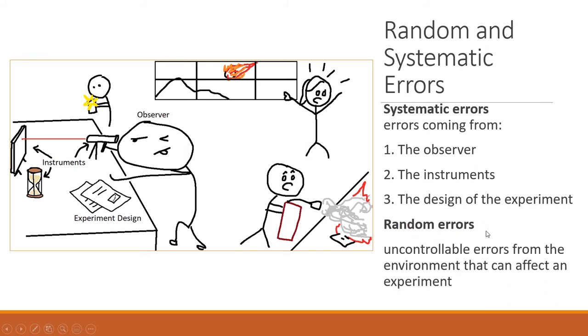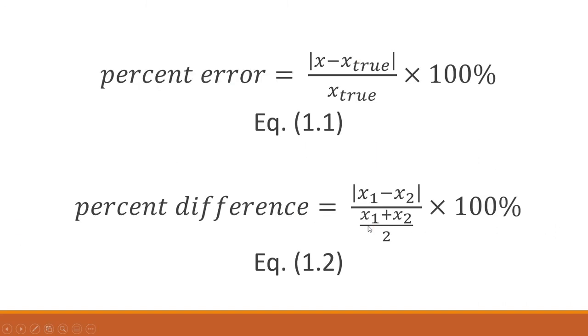What are random errors? Pretty easily defined - uncontrollable errors from the environment that can affect an experiment. For example, something is burning - what can you do? Maybe it affects the experiment. How about someone taking a selfie? It might affect the experiment because this laser emits light. Or a meteorite coming to destroy the whole laboratory - that's an uncontrollable error that will destroy your experiment and the whole laboratory.